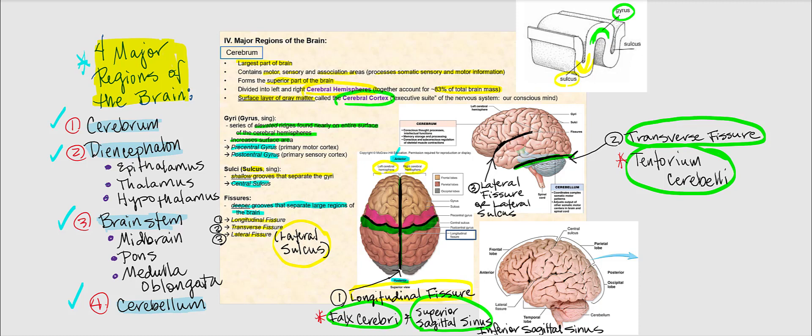This dural fold that runs along the transverse fissure is what separates the cerebrum from the cerebellum. The last fissure is the lateral fissure, also referred to as the lateral sulcus, which separates the frontal and parietal lobes from the temporal lobes of the cerebrum.